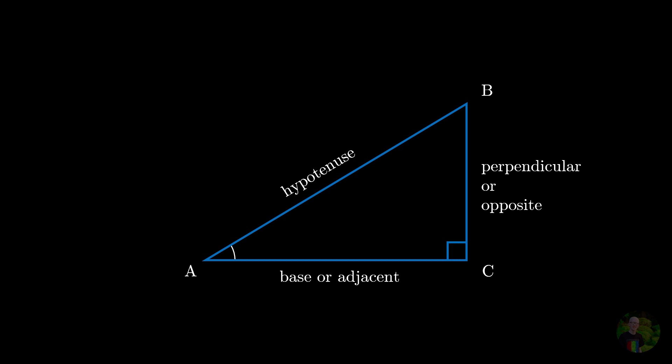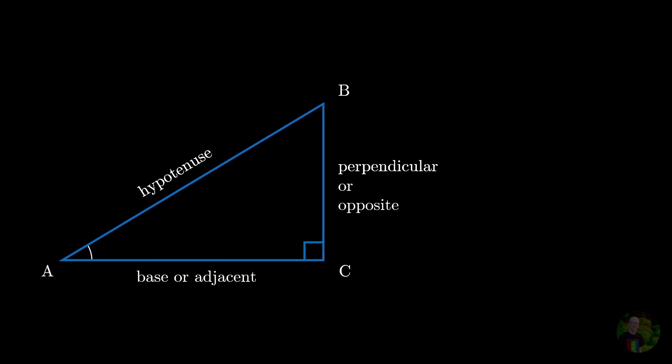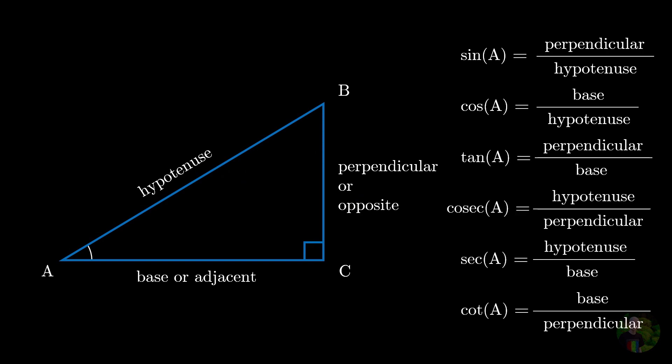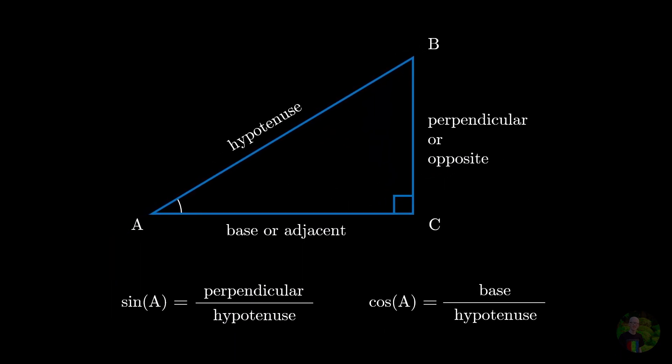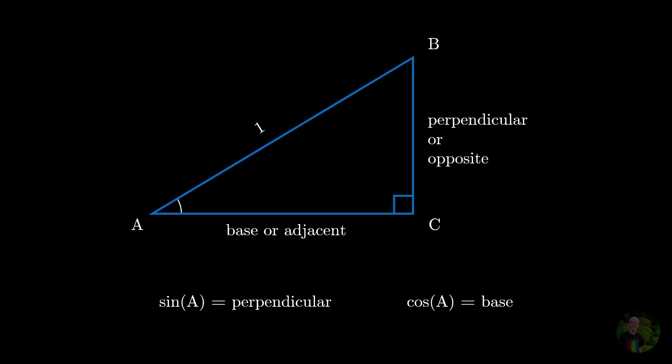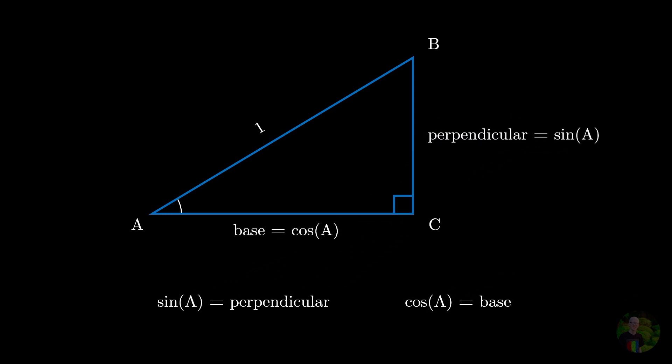And, we know that sine A is the ratio of the perpendicular to the hypotenuse, cos A is the ratio of the base to the hypotenuse, and so on. And for our convenience, we will let the hypotenuse of the triangle to be 1 unit, because then we can express the base as just cos A and the perpendicular as sine A. And,